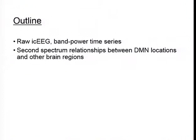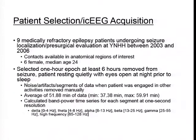Here is a brief outline: first I'll go over work we did with the raw intracranial EEG and band power time series extracted from that, and then go into second spectrum relationships — what that means and what motivated that study — between default mode network locations and other brain regions.